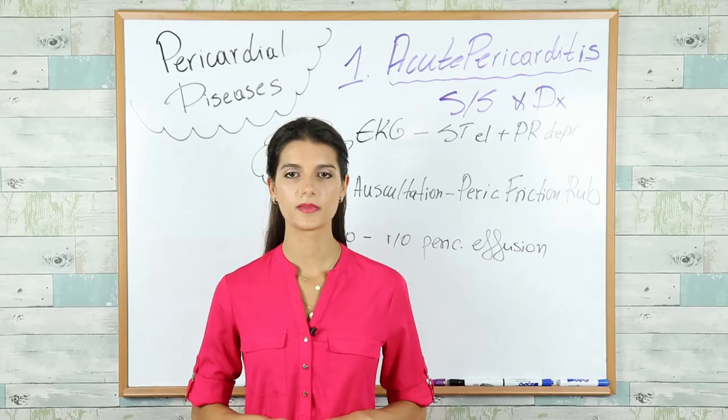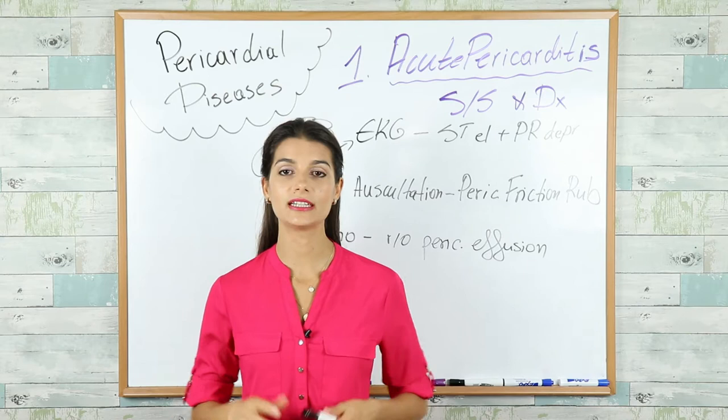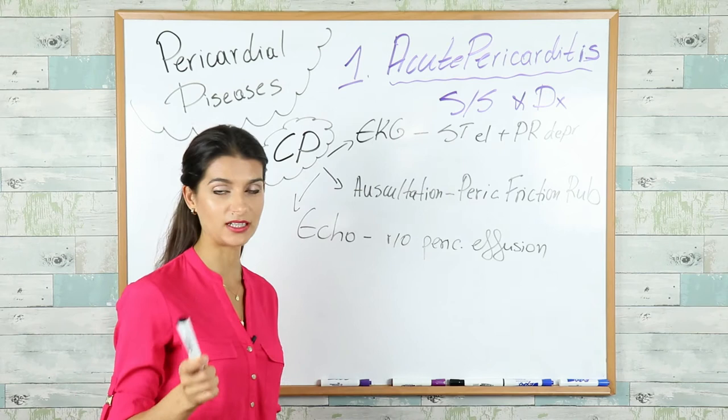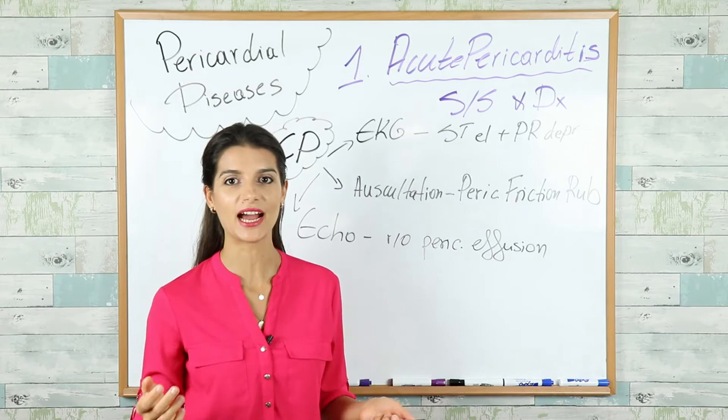A patient with acute pericarditis will present with chest pain. When a patient with chest pain comes in, you do an EKG first to rule out MI. On the EKG, you're going to see diffuse ST elevations and diffuse PR depressions.